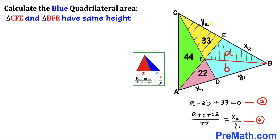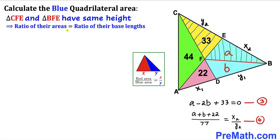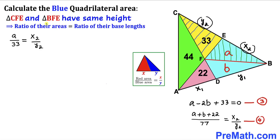Let's focus on triangles CFE and BFE. Both triangles have the same height, so the ratio of their areas equals the ratio of their base lengths. Therefore: A / 33 = X2 / Y2. Let's call this Equation 5.